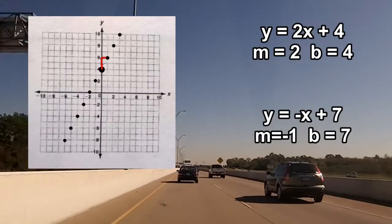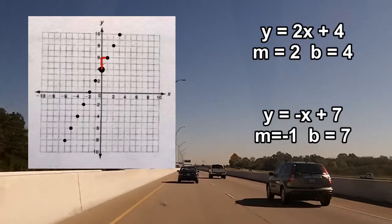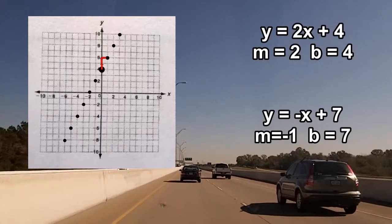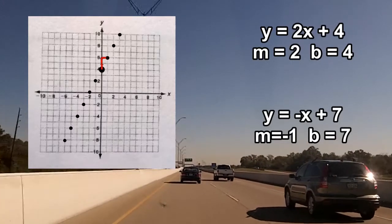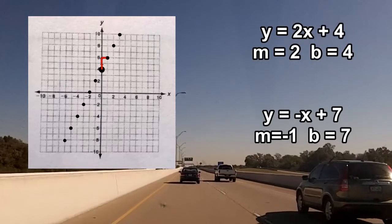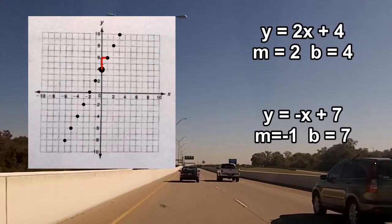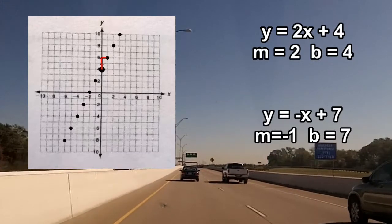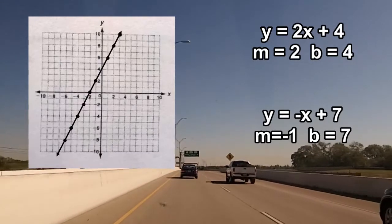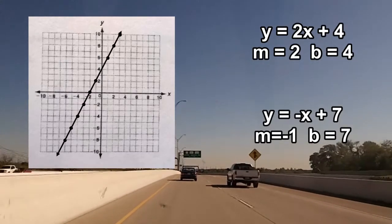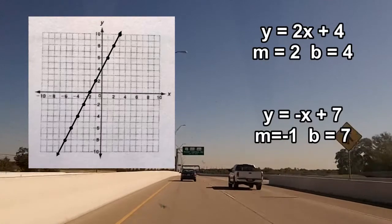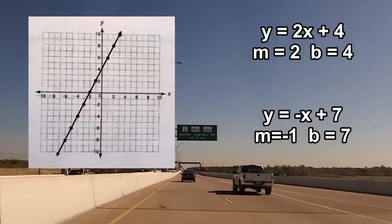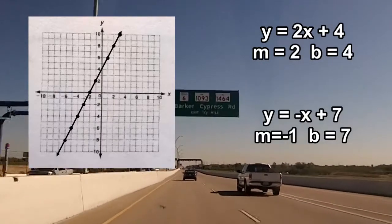When you get to the top, repeat the process by going down. From the y-intercept, go down two and left one until you get to the end of the coordinate grid. Now that we have the dots of the line, connect them to form the line. Now let's look at the next line.